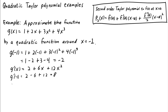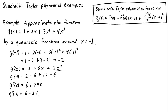One more derivative: the second derivative of g. The derivative of 2 goes away, the derivative of 6x is 6, and the derivative of 12x squared is 24x. g double prime of negative 1 is 6 plus 24 times negative 1, or minus 24, which is negative 18.